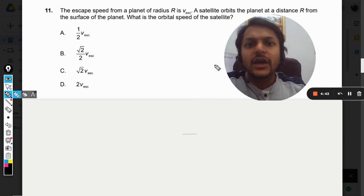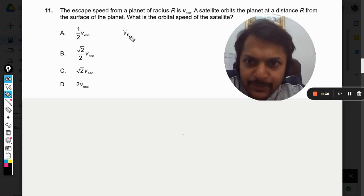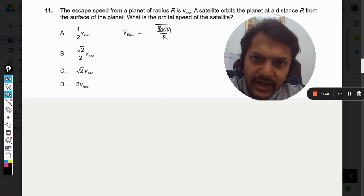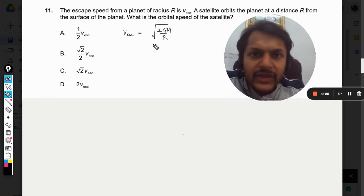Let us see. What is the formula for the escape speed first of all? Escape velocity is given by √(2GM/r). This is the escape velocity.